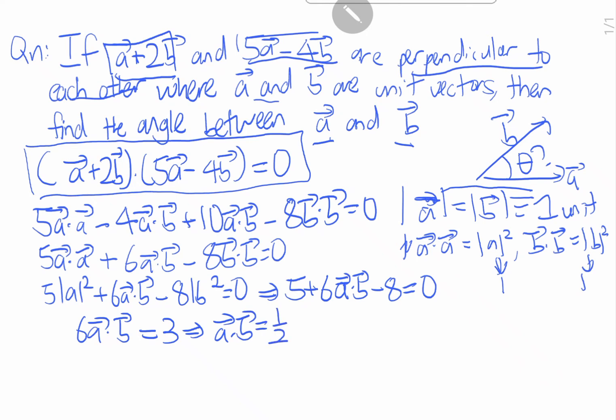We have already know the dot product formula which means that a dot b equals to ab cosine theta. You know that this equals to one, this equals to one, therefore a dot product of b equals to cosine theta. So now theta is the angle between a and b, so cosine theta equals to half.